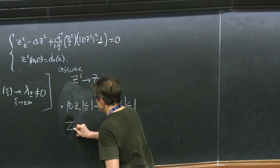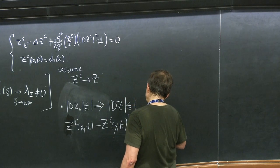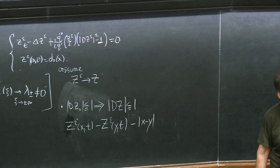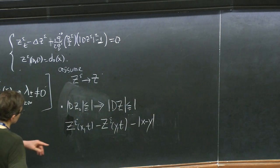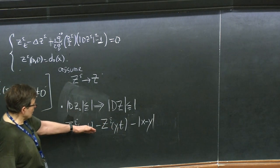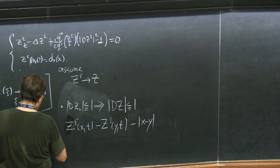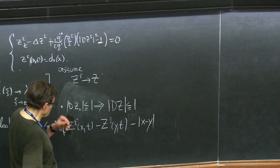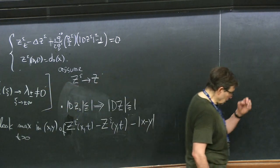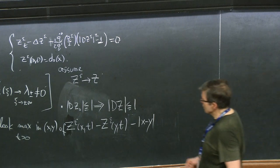Look at Z epsilon(x,t) minus Z epsilon(y,t) minus |x minus y|. We double the variables. We want to prove this Lipschitz estimate holds initially. The only thing I care about is the maximum of that expression for t positive. Because if the maximum happens at t₀, then I have the answer. So you look at that, and then what happens at this maximum? You have to assume there is a maximum, so look at the maximum — call it x-bar, y-bar.